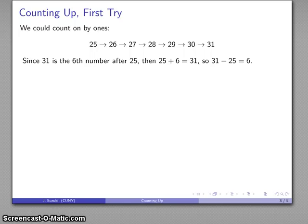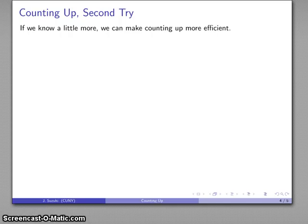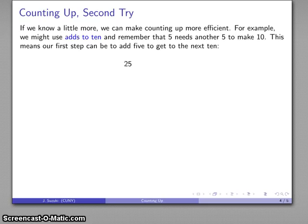Well, a little knowledge goes a long way. If I know a little bit more than how to count by ones, I can actually make this algorithm much more efficient. For example, I might use the adds to 10 approach. If I want to go from a 5 to the nearest 10, I need 5 more. The first step can be to add 5 to get to the next 10.